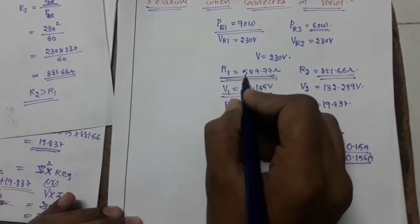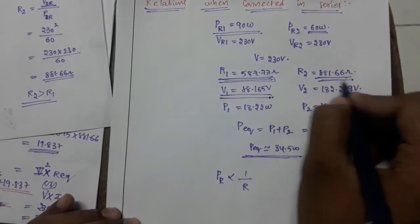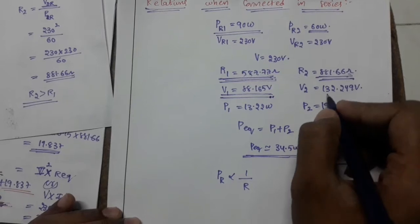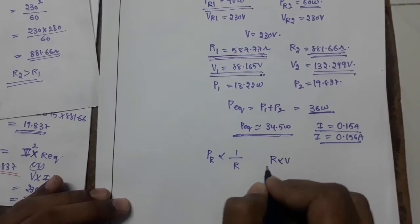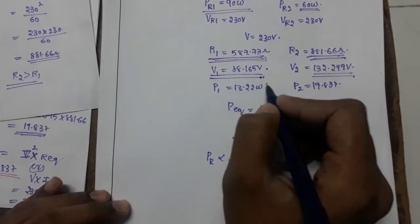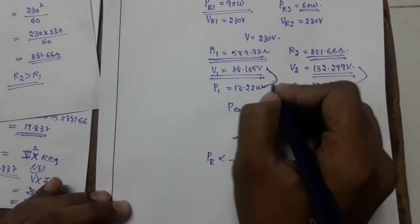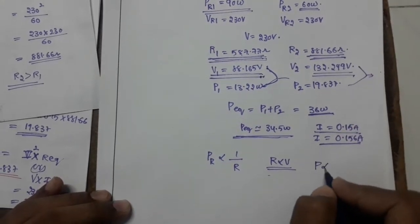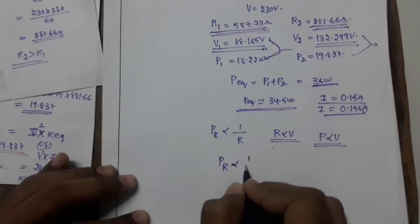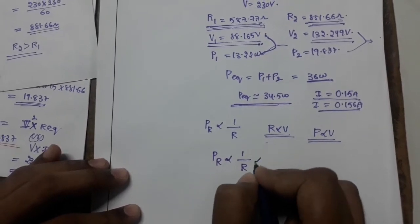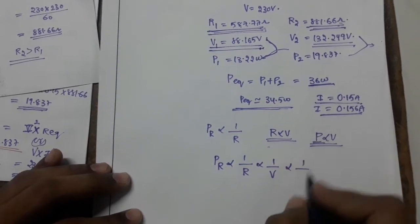Resistance of bulb 1 = 587.77 ohms where the voltage drop is 88.165 V. Resistance of bulb 2 = 881.66 ohms and voltage drop is 132.249 V. So resistance is proportional to voltage, and power consumed is also proportional to voltage. Therefore, power rating (PR) is inversely proportional to resistance, inversely proportional to voltage, and inversely proportional to power consumed by the bulbs.